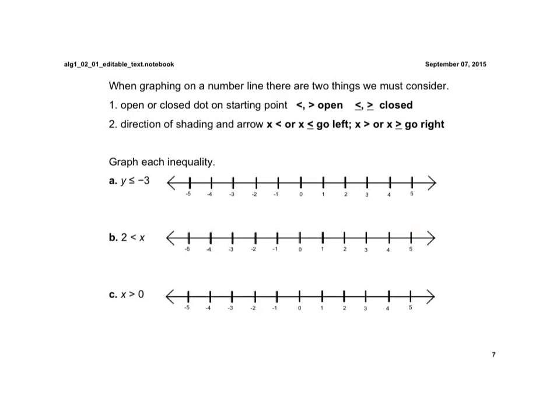Now, they're wanting us to graph. When graphing on a number line, there are two things we must consider. We have to know whether we're going to use the open or closed dot. If it's just a less than or greater than, we open it, meaning that that number is not included in the solution. And if it is equal to, then we use closed, because equal to means that that number is part of the solution.